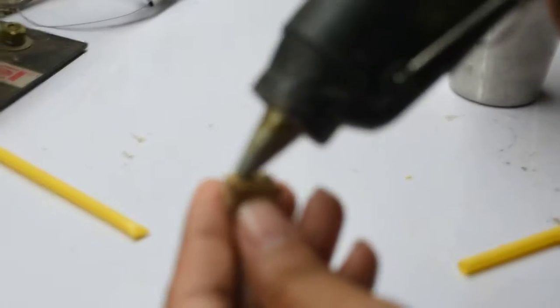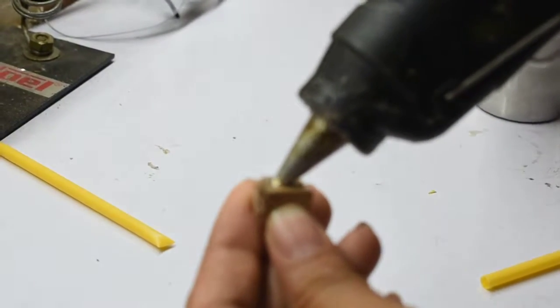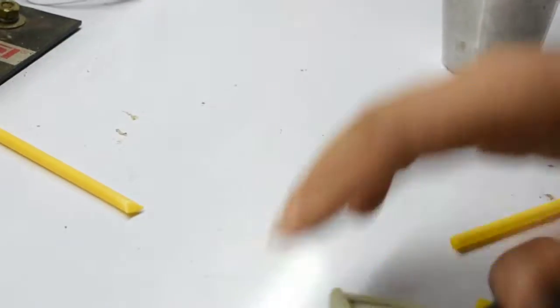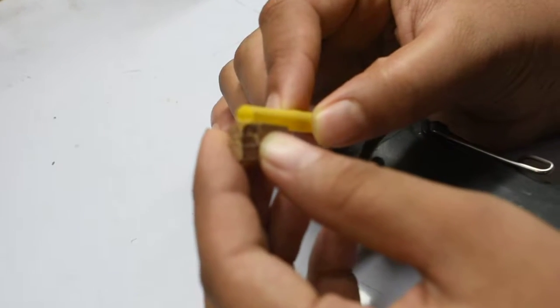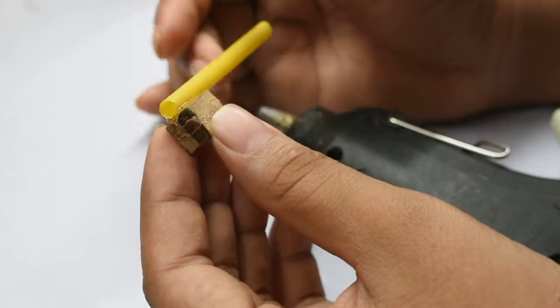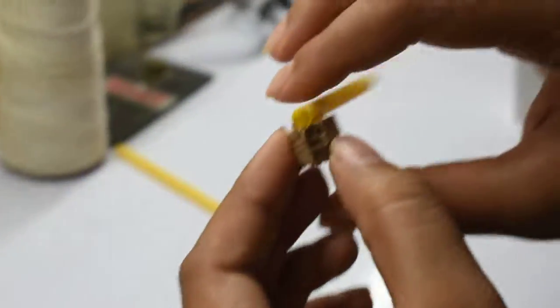Next, take a glue gun and put it on the edge of the block. Then take a straw and place it on top. This will be the straw you blow through.